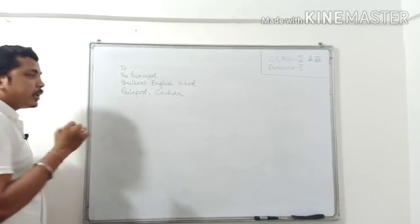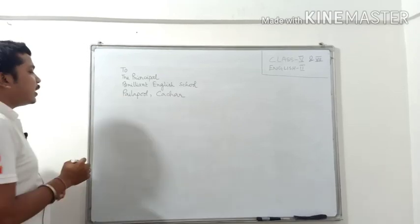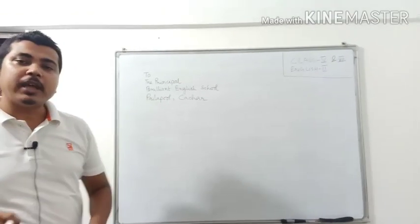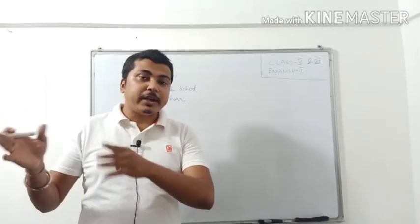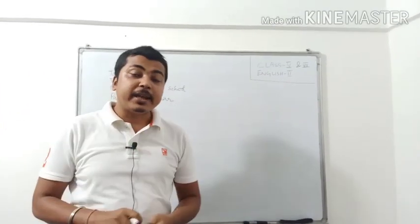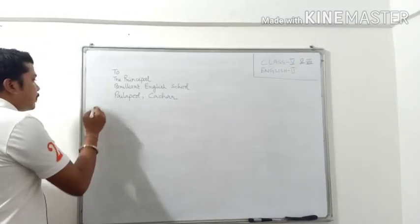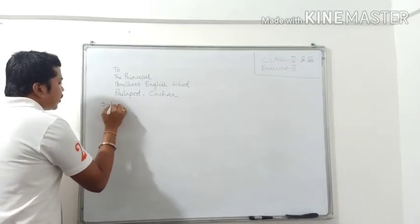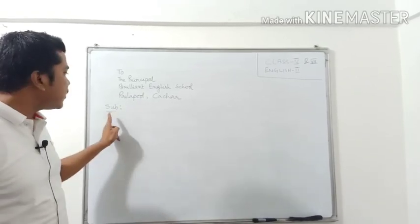Now next, what are you going to write in your application? That means you have to give a short title for your application. How we have the title for the story? Before reading the story, if we read the title, we can understand the complete story. Now same way, here also in our application, we are going to provide a title that is called subject.